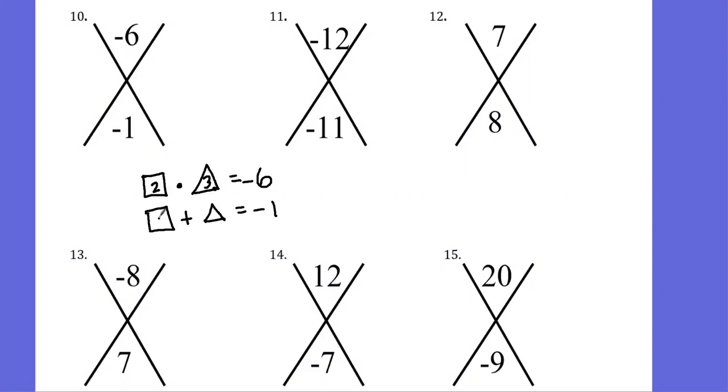So ignoring the signs for a second, I know that two times three would give me six. In order to get my negative one when I add, we need the negative with the three. So we should have positive two and negative three. Positive two times negative three gives negative six, and positive two plus negative three gives negative one.